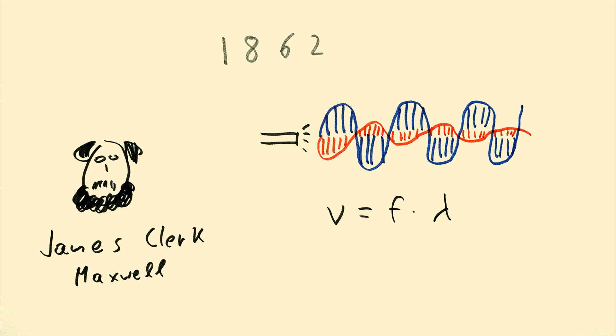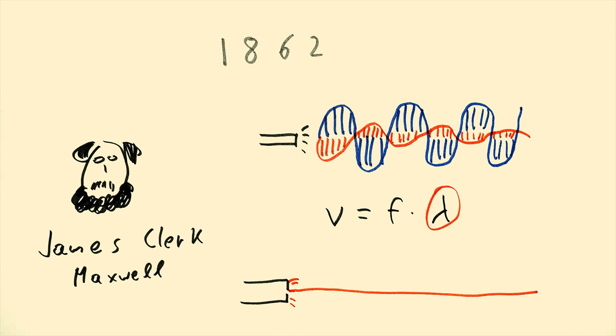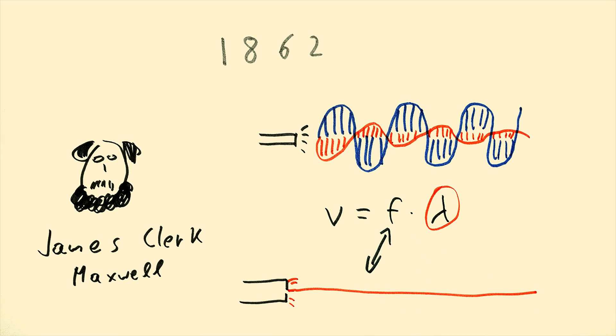Actually, we only needed to find the wavelength, as the frequency was already known, since the beam of light was shot from a laser which emitted a certain frequency. So how did we measure the wavelength?